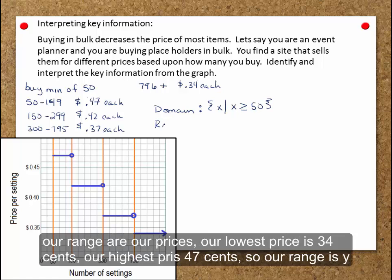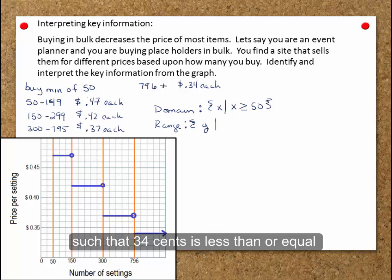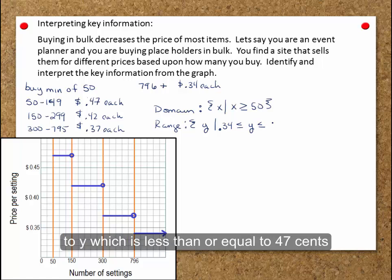Our range are our prices. Our lowest price is 34 cents, our highest price is 47 cents. So our range is y such that 34 cents is less than or equal to y, which is less than or equal to 47 cents.